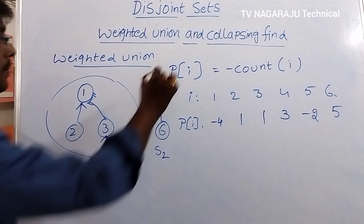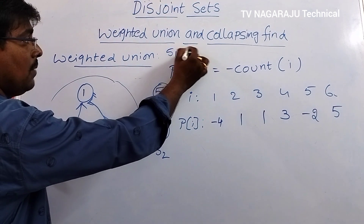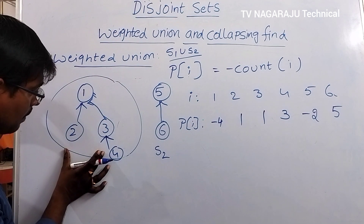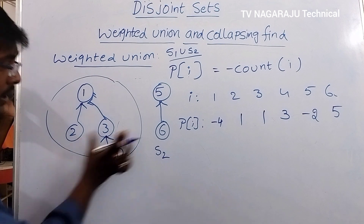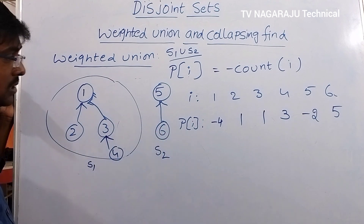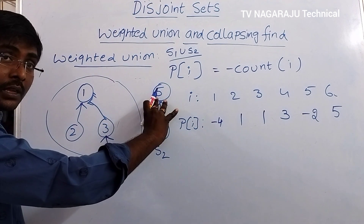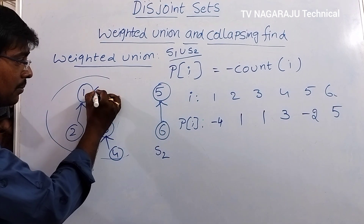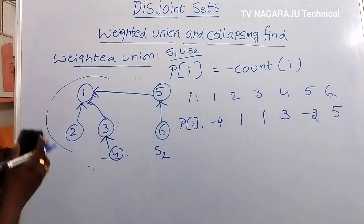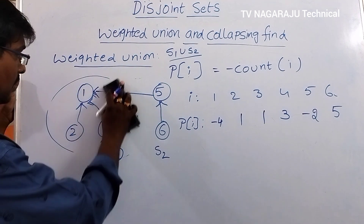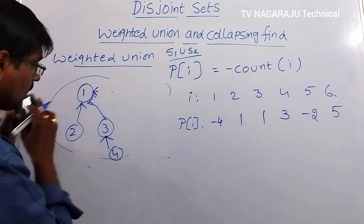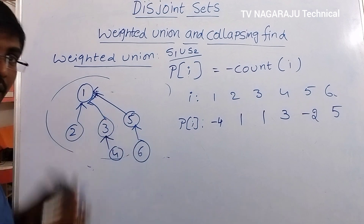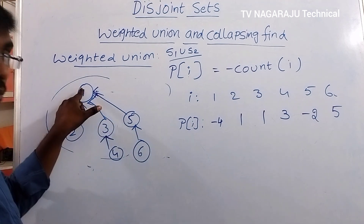Now the aim is to perform the union operation between the two sets. The simple logic is: S1 has 4 nodes and S2 has 2 nodes. Since we connect the small number of nodes to the large number, nodes 5 and 6 are attached under root node 1. So the root node of the resulting tree becomes 1.